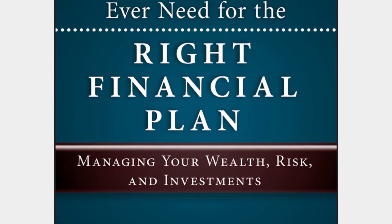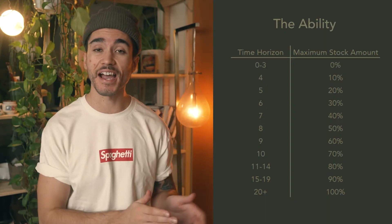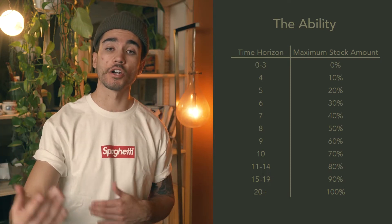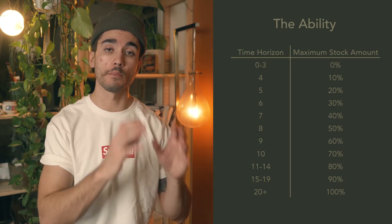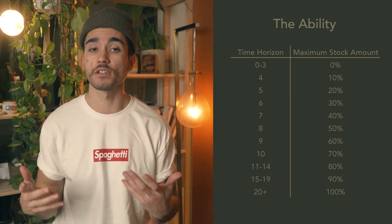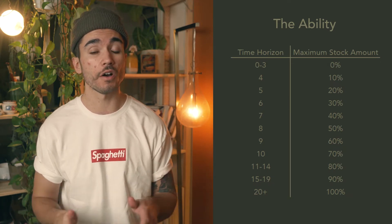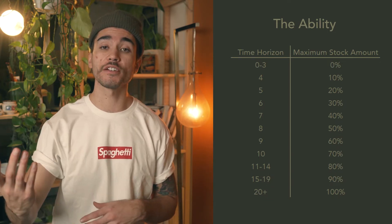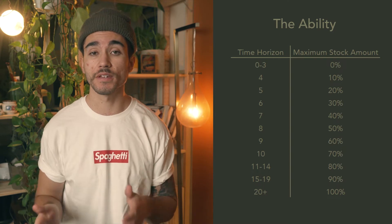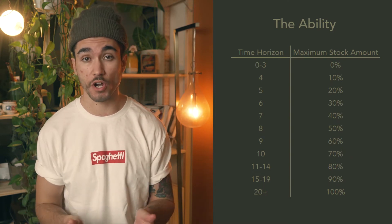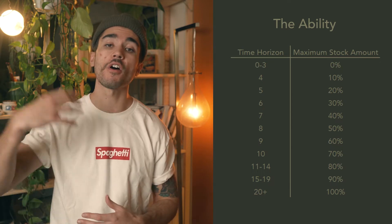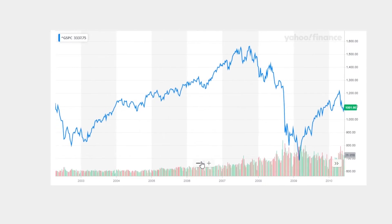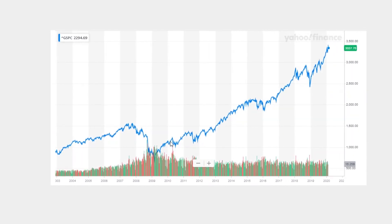Larry Swedroe, the author of The Right Financial Plan, provides guidelines for assessing your risk based on your time horizon. As the timeline gets longer, it's a good idea to incorporate more stocks into your portfolio. This increases the level of risk of your portfolio, but it also increases the level of return you can expect. If your timeline is over 20 years, like mine is, then it can make sense to be invested in 100% stocks. Statistically, the farther you go out in time, the higher the chance that you're going to have a positive return on your investment.